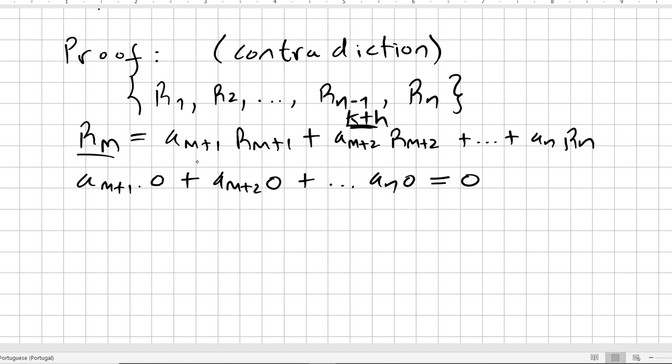All this will be am+1·0 + am+2·0 + ... + an·0, and then we would get a zero.